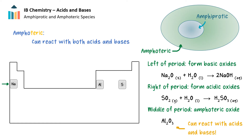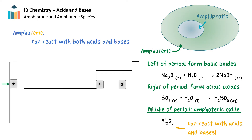Conversely, nonmetal oxides on the right of period 3 form acids in water. Sulfur dioxide reacts with water to form sulfurous acid, a strong acid. Just as acids neutralize bases, an acid will likewise be neutralized by a base, but the acid formed will not react with another acid. However, if we look to the center of period 3, aluminum oxide does not react readily to form an acid or a base in water, but the oxide itself can react with either an acid or a base. Therefore, aluminum oxide is considered amphoteric. However, it's not amphiprotic, as it is incapable of donating or accepting a proton.